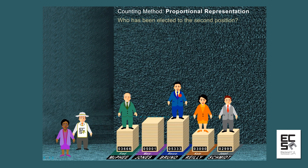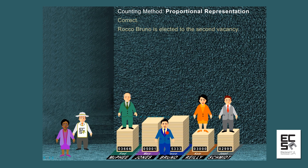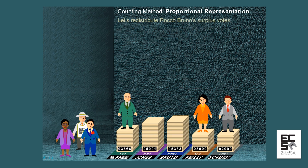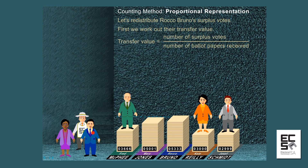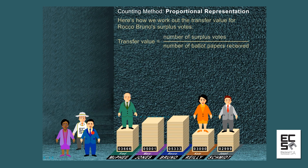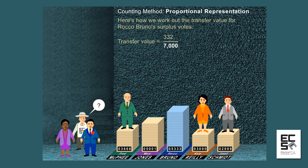Rocco Bruno is elected to the second vacancy. Let's redistribute Rocco Bruno's surplus votes. First, we work out their transfer value: transfer value equals number of surplus votes divided by number of ballot papers received. Transfer value equals 332 divided by 7,000, which equals 0.047428.